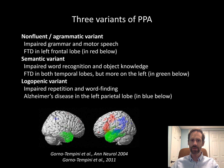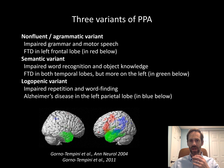Two of the subtypes of frontotemporal degeneration are also considered subtypes of primary progressive aphasia or PPA — meaning a problem with language which is progressively worsening over time. One of these is the non-fluent or agrammatic variant of PPA. In this subtype, people really struggle to get words out, have a hard time forming words with their mouth, and the result can sound garbled or strangled. They also have problems understanding grammatically complex sentences.